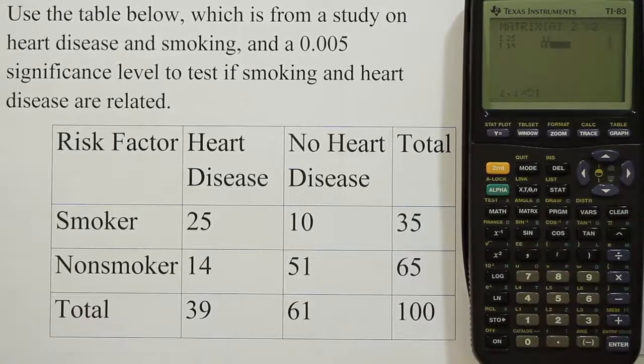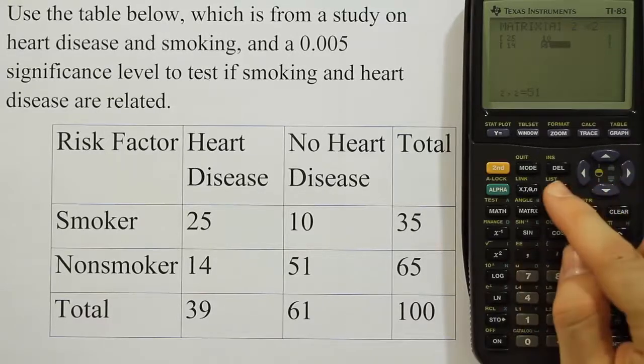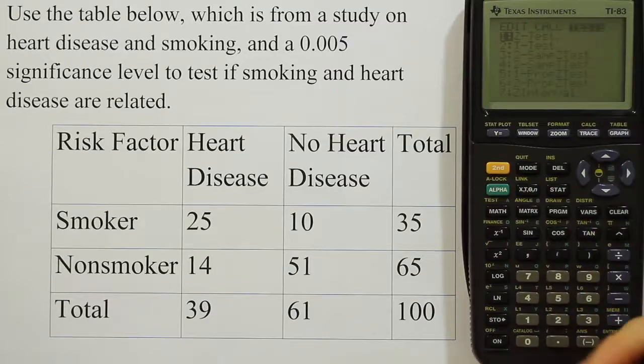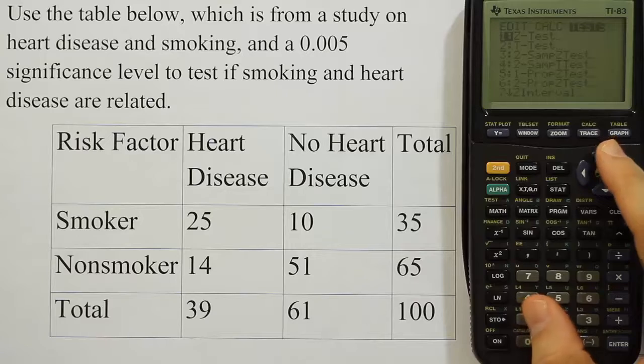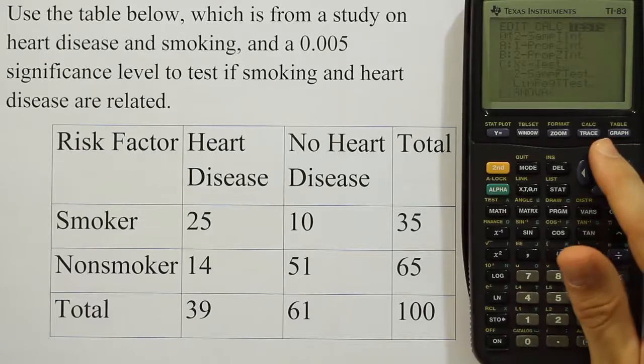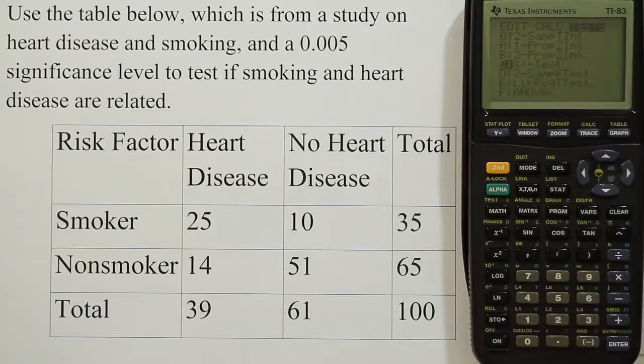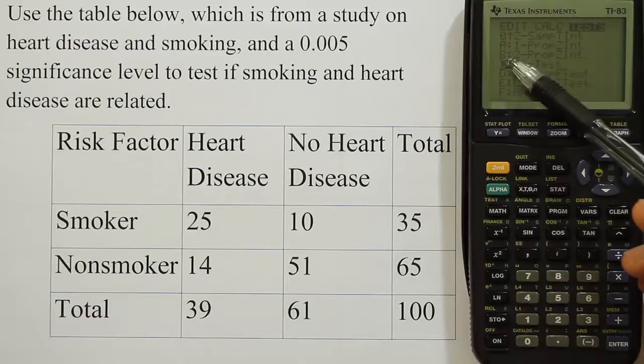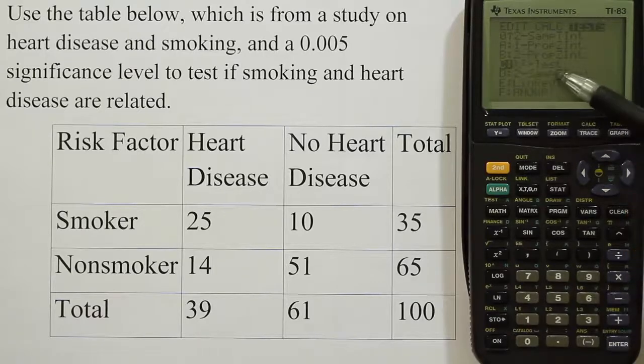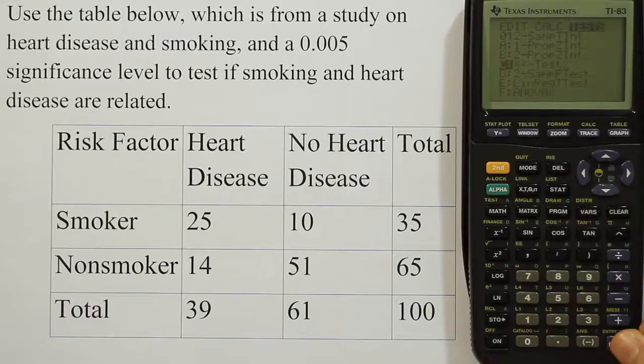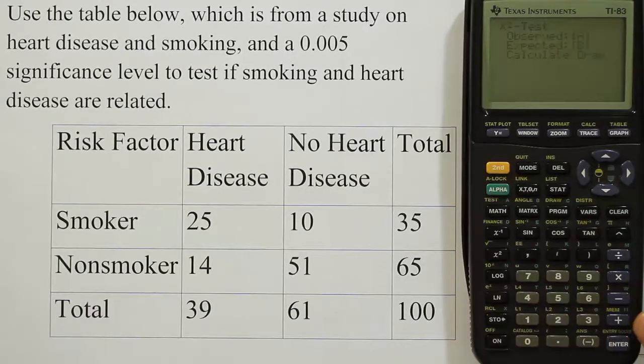The next procedure is to press my stat key. I'm going to arrow over to where it says tests. I'm looking for the chi-squared test. I'll push the up arrow because it's at the bottom. I'm going to scroll up to where I see in my calculator option C where it says chi-squared test. That may be named differently—it'll always say chi-squared test, but it may not be C. It could be D in some calculators or B. It depends on what other procedures the calculator has. But it should say chi-squared test. Once you're there, hit enter.